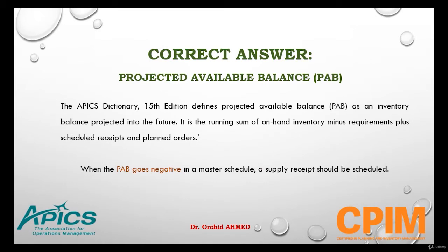The APICS Dictionary, 15th edition, defined projected available balance as an inventory balance projected into the future. It is the running sum of on-hand inventory minus requirements plus scheduled receipts and planned orders. When the projected available balance goes negative in a master schedule, a supply receipt should be scheduled.